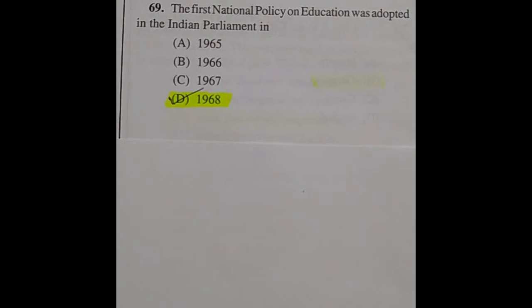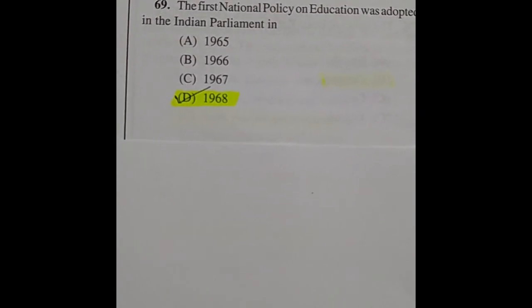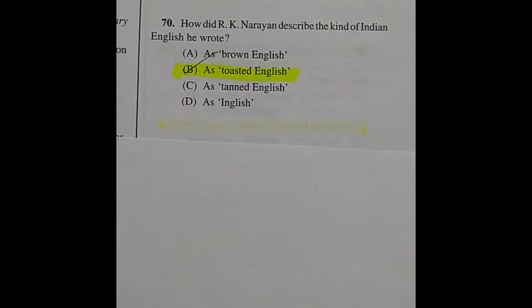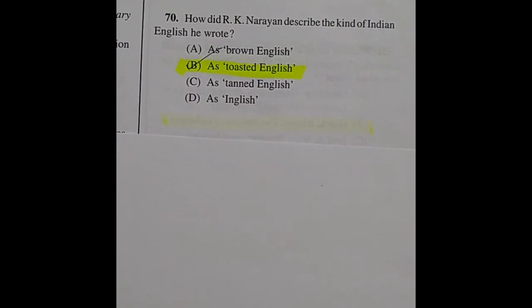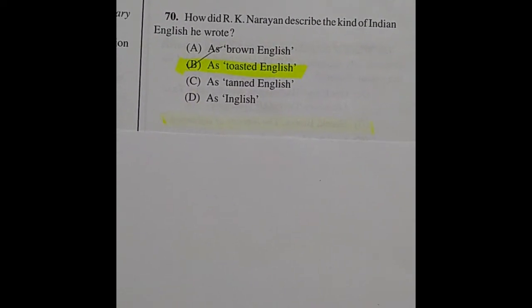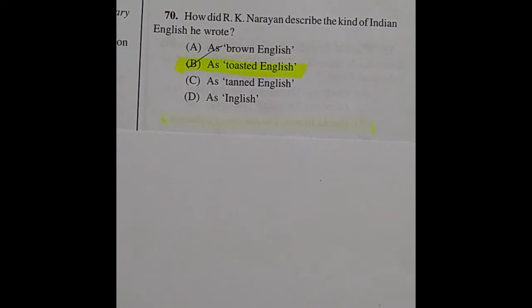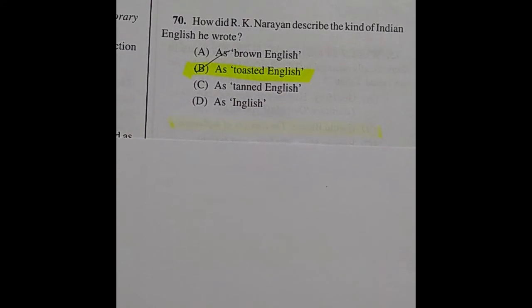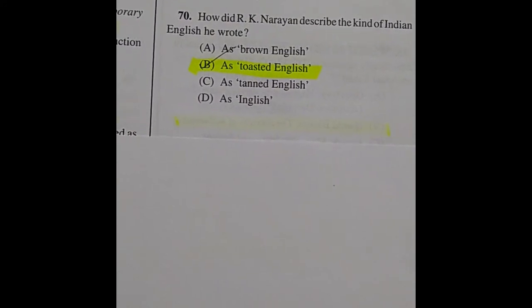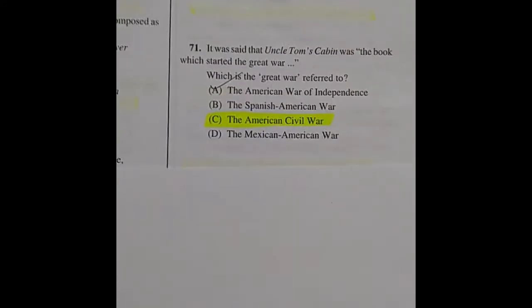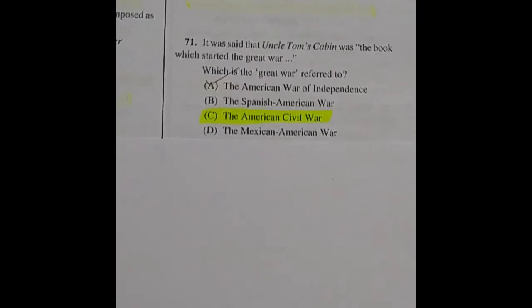Question 69: The first National Policy on Education was adopted in the Indian Parliament in — the right answer is 1968, option D. Question 70: How did R.K. Narayan describe the kind of Indian English he wrote? The right answer is option B: as 'toasted English.'